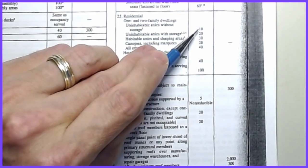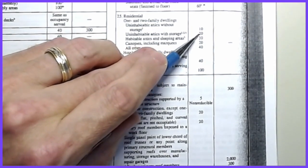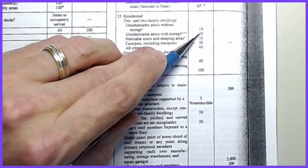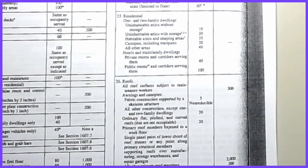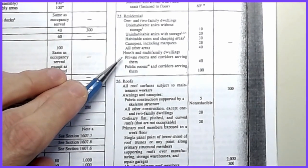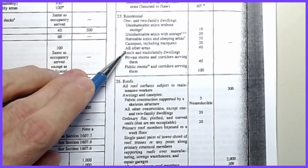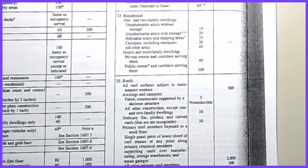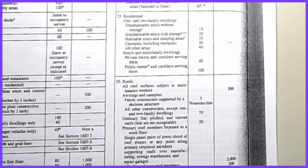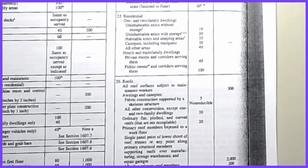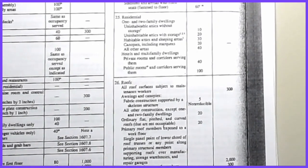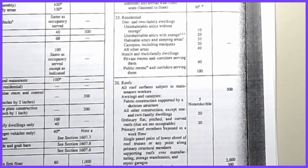For residential one- and two-family dwellings, uninhabitable attics are designed for 10 psf — similar to the roof load concept. Attics with storage are 20 psf, though if you're stacking 100 years of library books up there that number probably isn't sufficient — use your best engineering judgment. Private rooms and corridors in hotels and multi-story dwellings are taken as 40 psf. Notably, residential sections have no concentrated load requirement.